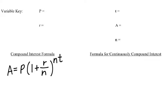Let's define these variables. First of all, the P out in front represents our principal. The principal is the initial investment, the initial amount invested.